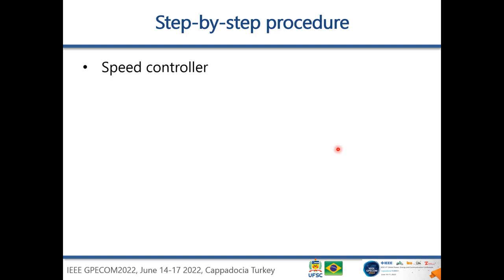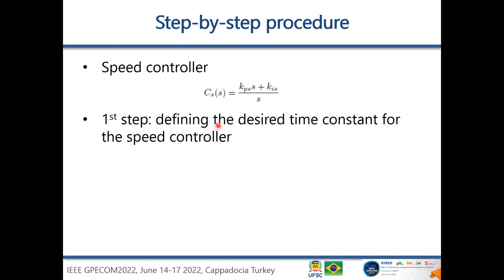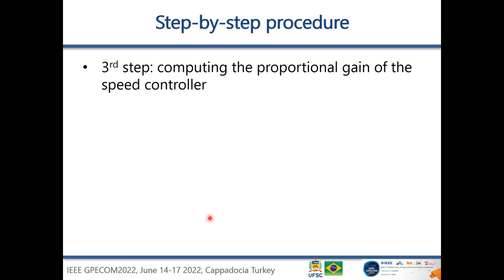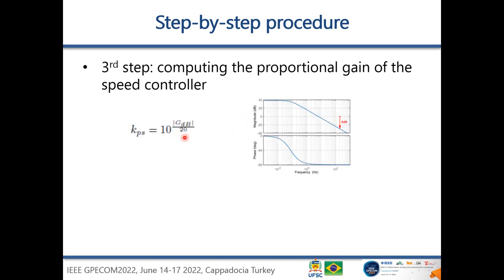After designing the current controllers, we proceed to the speed controller, which is also a PI controller requiring Kp and Ki. The first step is defining the desired time constant for the speed controller — typically set to 10 times higher than the current controller time constant. The second step is defining the cutoff frequency of the closed-loop speed controller, set approximately two decades below the switching frequency. The third step uses the frequency response approach: plotting the open-loop frequency response and computing the proportional gain Kps to achieve the desired cutoff frequency.